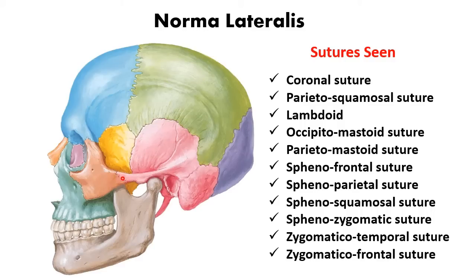The zygomaticotemporal suture lies between the zygomatic bone and the zygomatic process of the temporal bone. The zygomaticofrontal suture lies between the zygomatic and the frontal bone. These are the main sutures seen in the norma lateralis; other sutures have been discussed in the norma frontalis view.